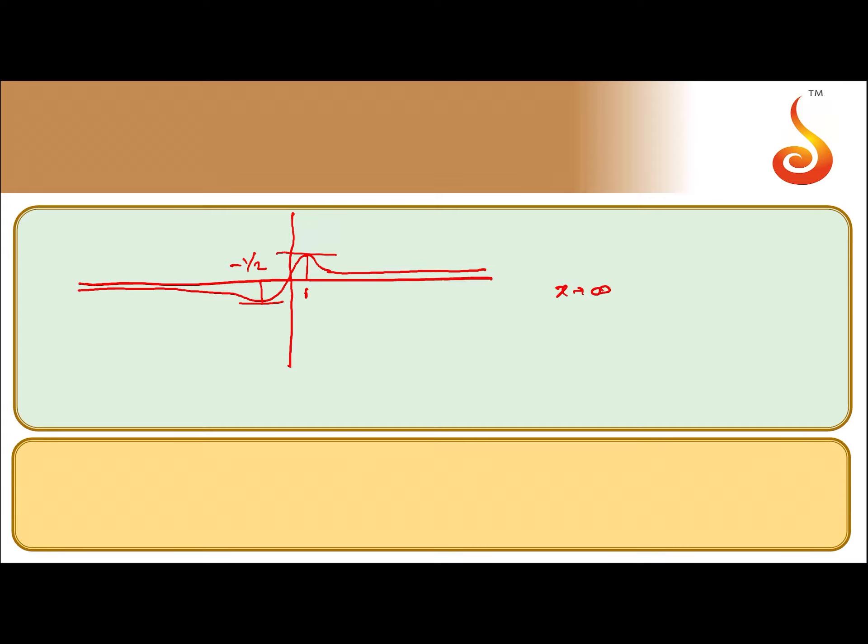As x tending to infinite, f of x is also tending to 0. Similarly, x tending to minus infinite, f of x is also tending to 0. That is the reason we get horizontal tangents at x equal to minus 1 by 2 and x equal to 1.